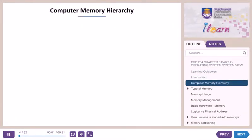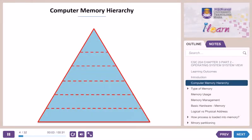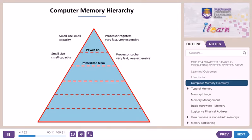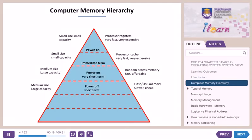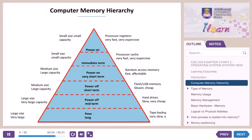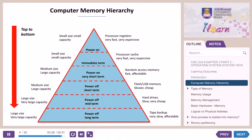Computer memory hierarchy. A ranking of computer memory devices, with devices having the fastest access time at the top of the hierarchy, and devices with slower access times but larger capacity and lower cost at lower levels. The register is the highest ranking because it has very fast access time; however, the cost of the register is very expensive. The tape backup has large capacity with the slowest access time.